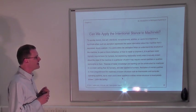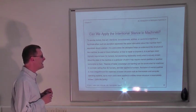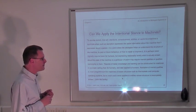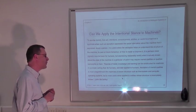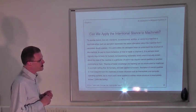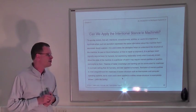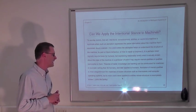Theories of belief, knowledge and wanting can be constructed for machines in a simpler setting than for humans and later applied to humans. Description of mental qualities is most straightforward for machines of known structure, such as thermostats and computer operating systems, but it's most useful when it's applied to entities whose structure is incompletely known.